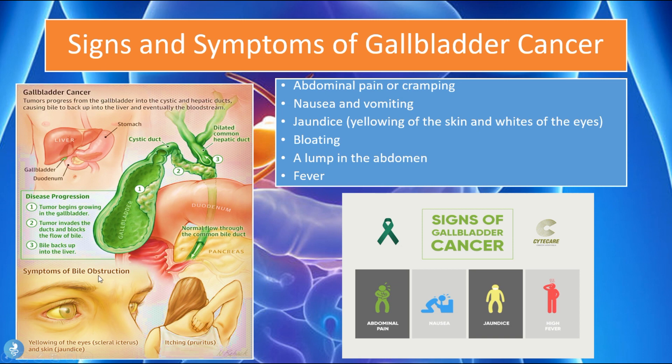We will have symptoms of a bile duct obstruction, similar to having a gallstone or sclerosing cholangitis. Signs and symptoms associated with gallbladder cancer include abdominal pain or cramping, nausea and vomiting, and jaundice — the yellowing of the skin and whites of the eyes. As that bile builds up and has nowhere to go, it backs up into the liver and pools into the bloodstream, causing jaundice. The patient will also experience bloating, a feeling of a lump in the abdomen, and fever.